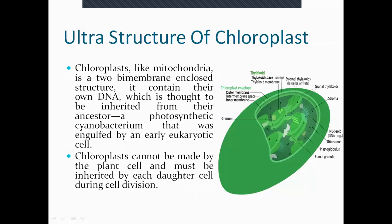Looking at the ultrastructure of chloroplast, you can see a dish-like organelle. Chloroplast is very similar to mitochondria in that it is made up of a two-membrane structure — both membranes are bilipid layer structures. It is a two-membrane organelle, and each of the membranes is a bilipid layer.